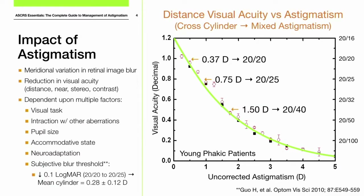The effect of astigmatism on vision is dependent on multiple factors — not just the magnitude, but the visual task you're performing, interaction with other aberrations, pupil size, accommodative state, neuroadaptation, and the subjective blur threshold. Patients just start to perceive the effect of astigmatism at about 20/25, which is about a quarter of a diopter.